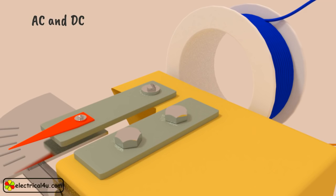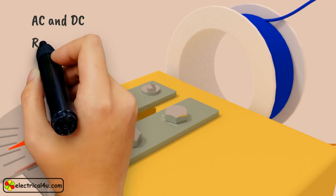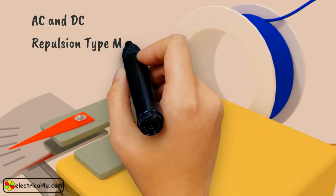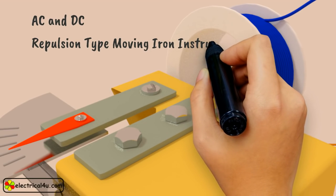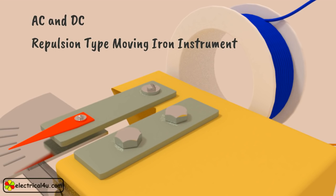The measuring instruments using this technique to measure electrical quantities are called repulsion type moving iron instruments. Repulsion type moving iron instruments are mainly used for the measurement of alternating currents and voltages, though it can also be used for DC measurements.